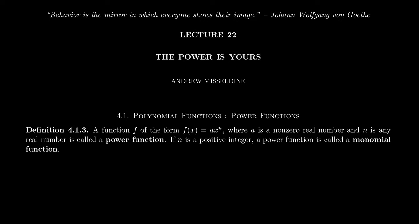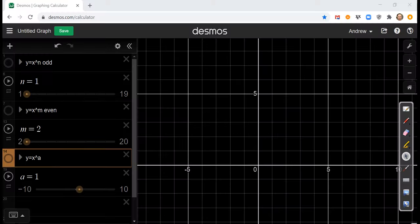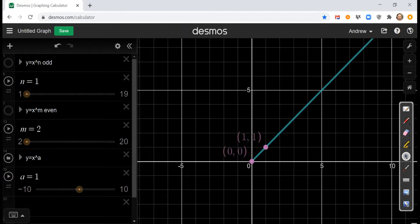Of particular importance in chapter 4, we're going to focus on when n is a positive integer, for which we call this a monomial function. In this lecture we'll focus a lot on monomials, but the general power function will be treated as well. We're going to switch over to Desmos for a little bit to do some graphing.